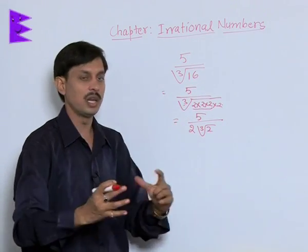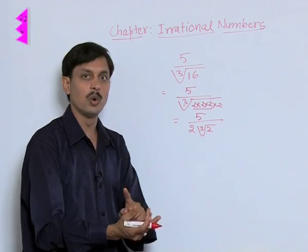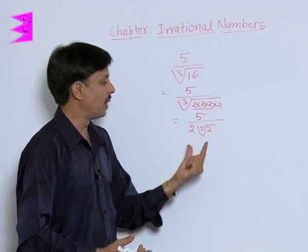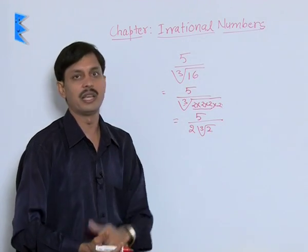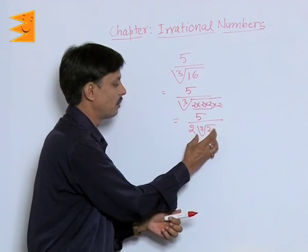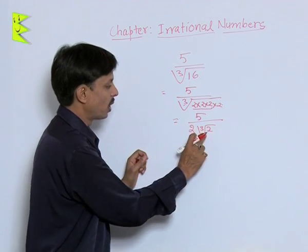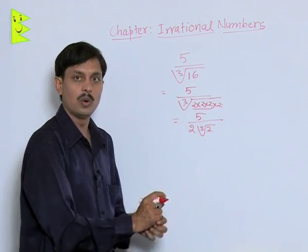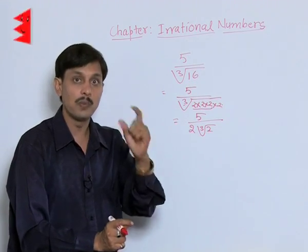Now, the question is we want to remove or we want to bring the denominator in the rational form, where denominator must be a rational number. In order to remove this cube root of 2 what we need? Cube root of 4.